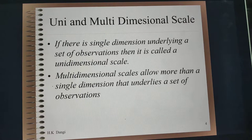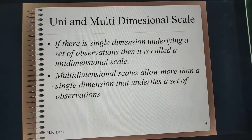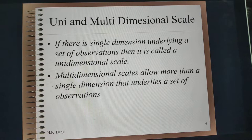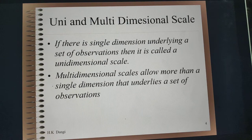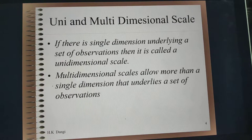Scales could be unidimensional and multidimensional. If there is a single dimension underlying a set of observations then it is called a unidimensional scale, while a multidimensional scale allows more than a single dimension underlying a set of observations. So if you are looking at one attribute at a time of a given product or service then it would be unidimensional, but if you are looking at multiple perspectives or multiple attributes then it would be multidimensional scaling.